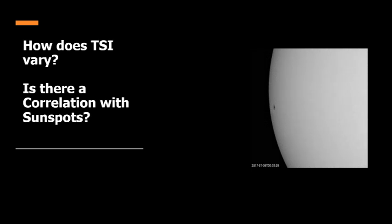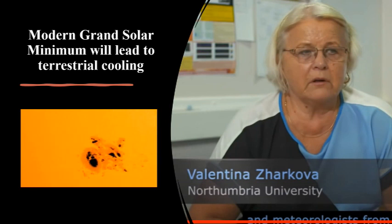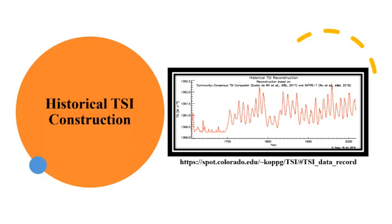We now asked just what causes TSI to vary. Is there a correlation with sunspots? With that question, we now come to the work of Valentina Zakova of Northumbria University. It has long been known that there is a relationship between TSI and the number of sunspots appearing on the Sun and global temperature. This chart shows a construction of historical TSI levels.